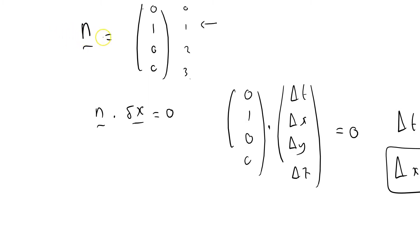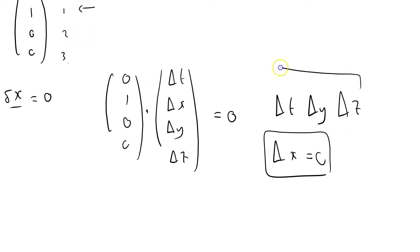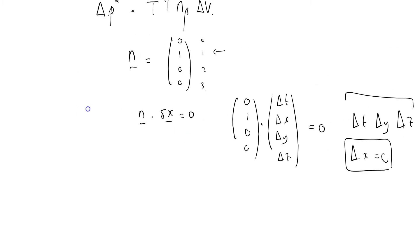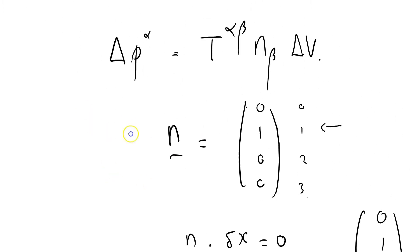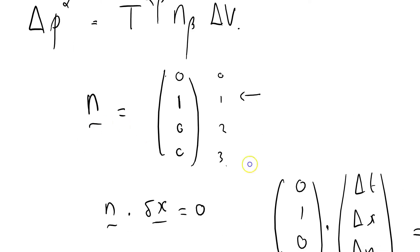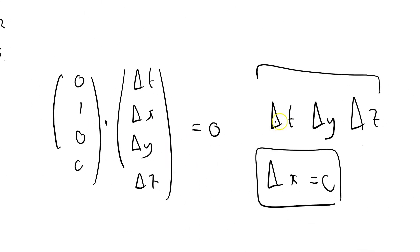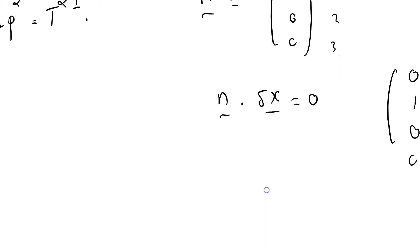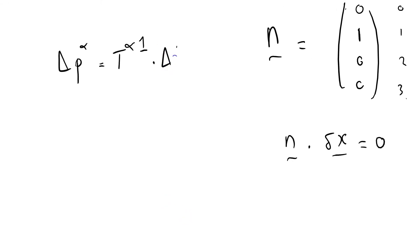So this little unit vector here is giving me a different set of infinitesimals to work with. Well let's see what the equation says. That says that delta p alpha equals t alpha, and then beta equals 1, because that's the only component that's got a non-zero component here, times delta v, which was delta t, delta y, delta z.